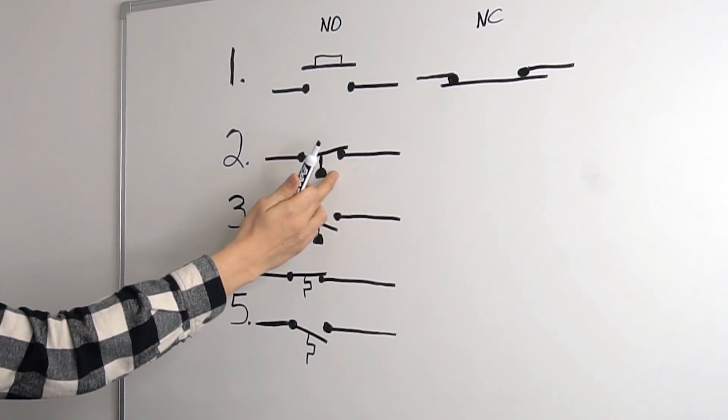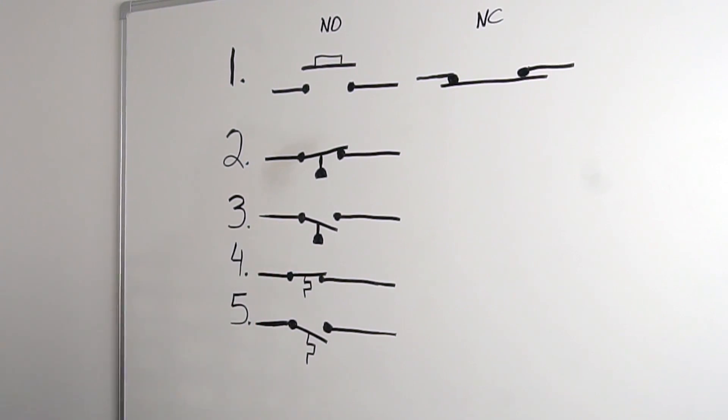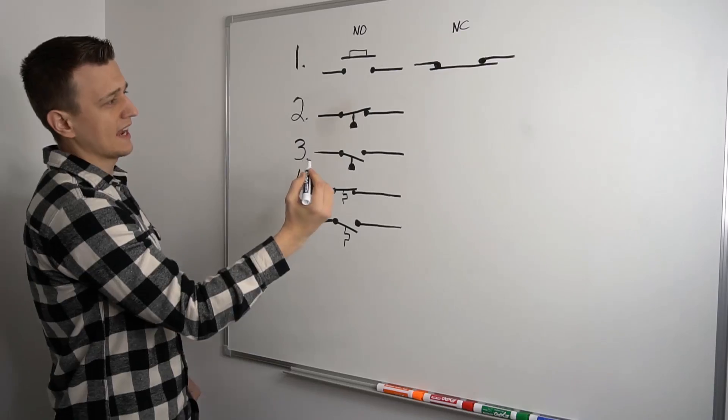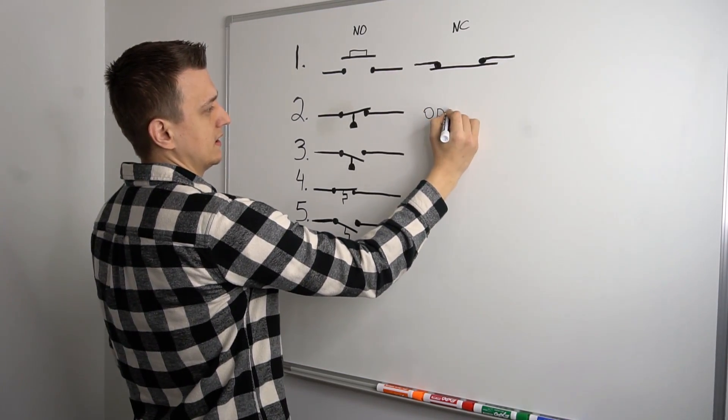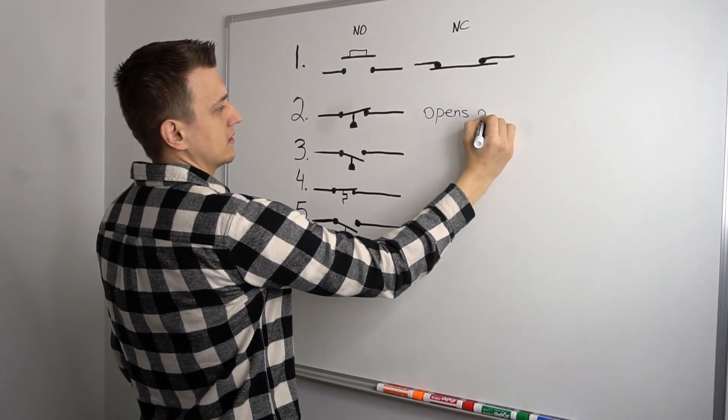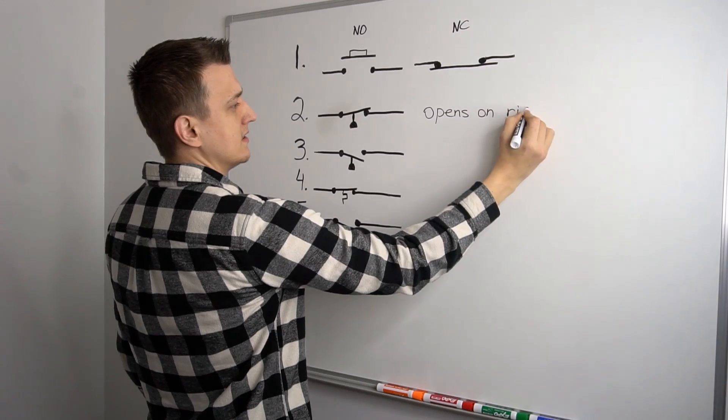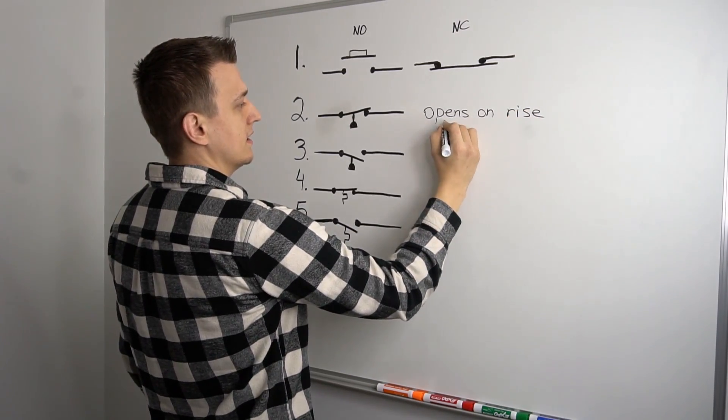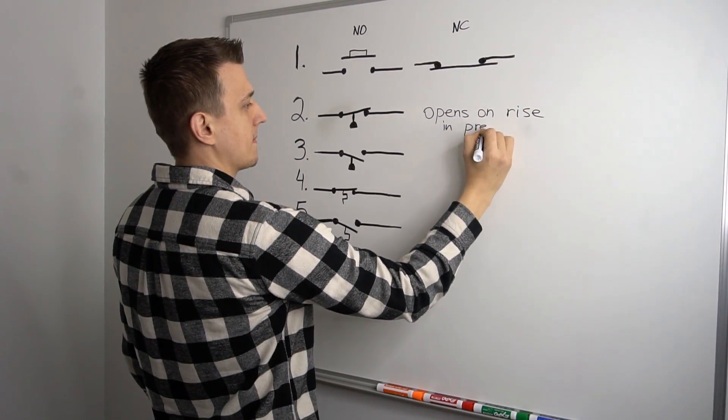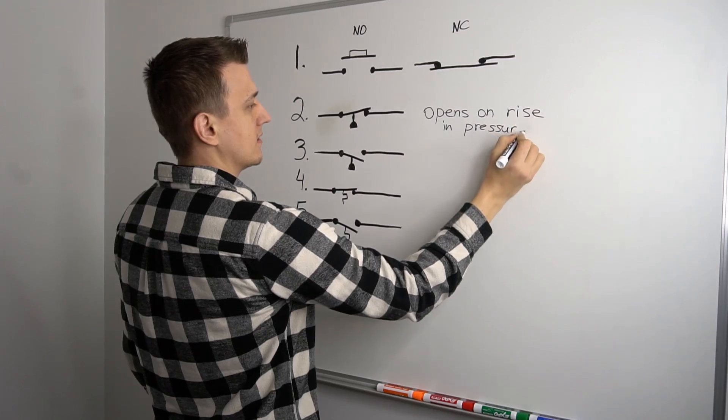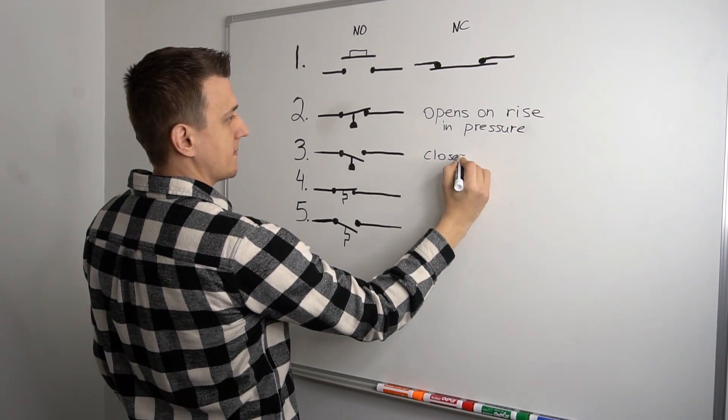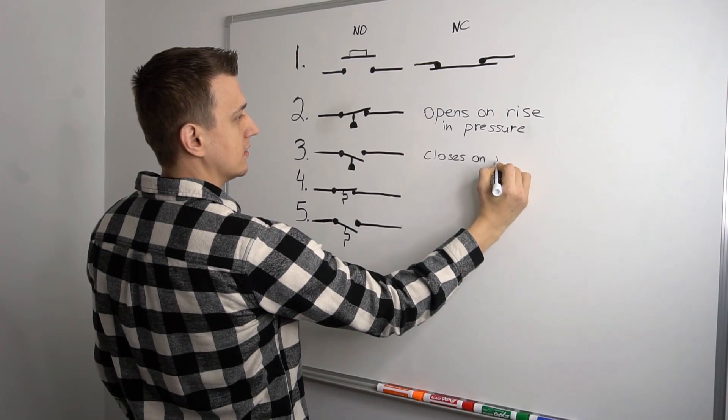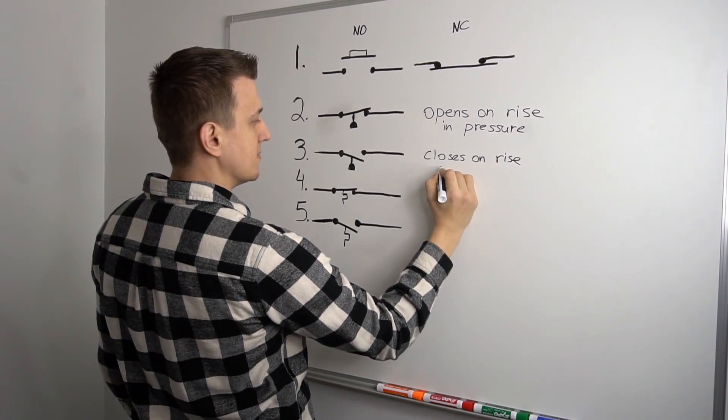These pressure switches, they basically either close on the rise of pressure or they open on a rise of pressure. So this one right here is a normally closed pressure switch. This one is a normally open pressure switch. And actually, let's go ahead and write that down. So this one opens on rise in pressure.